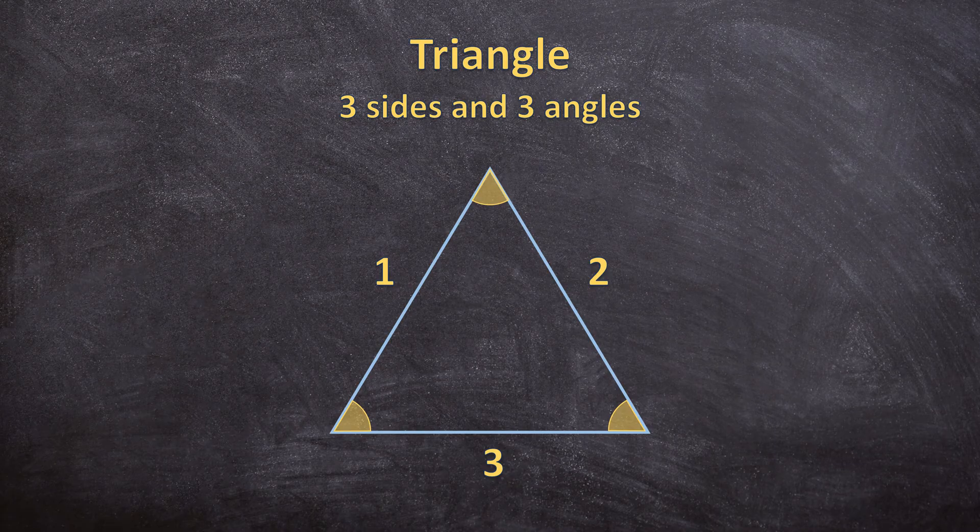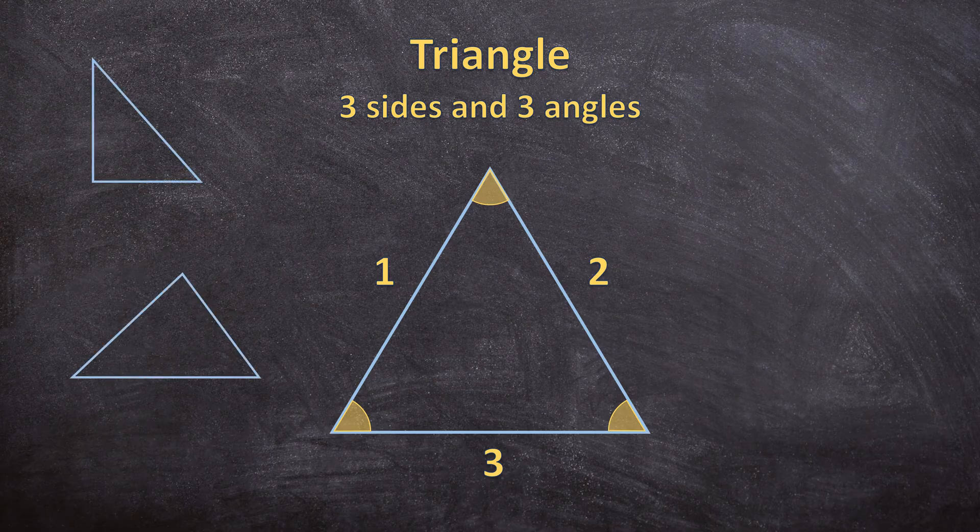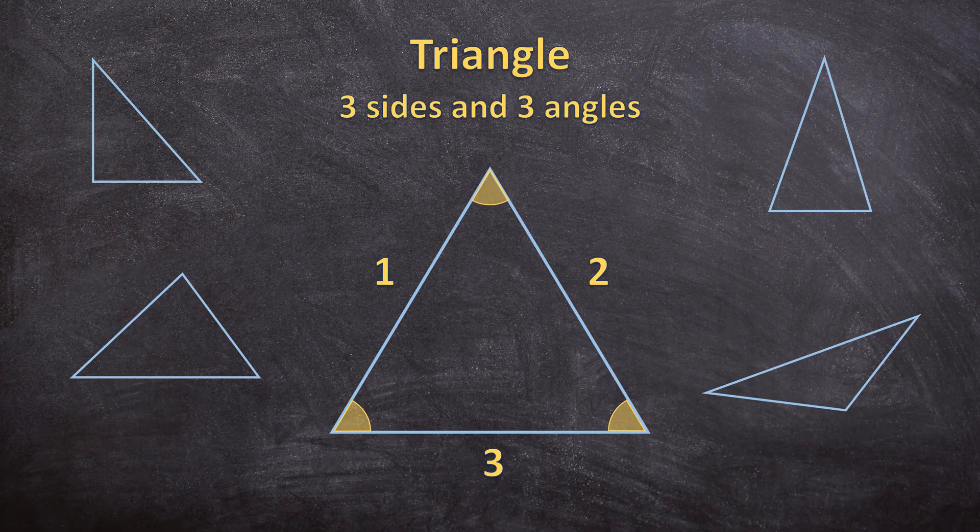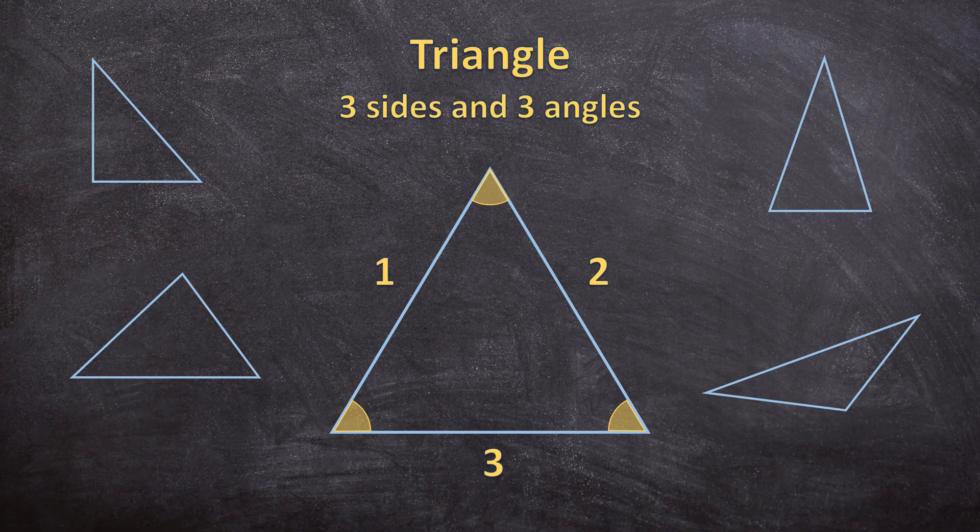Here are a few more examples of triangles. All of them look different but all of them have 3 sides and 3 angles so all of them are triangles. Now let's look at the next shape.